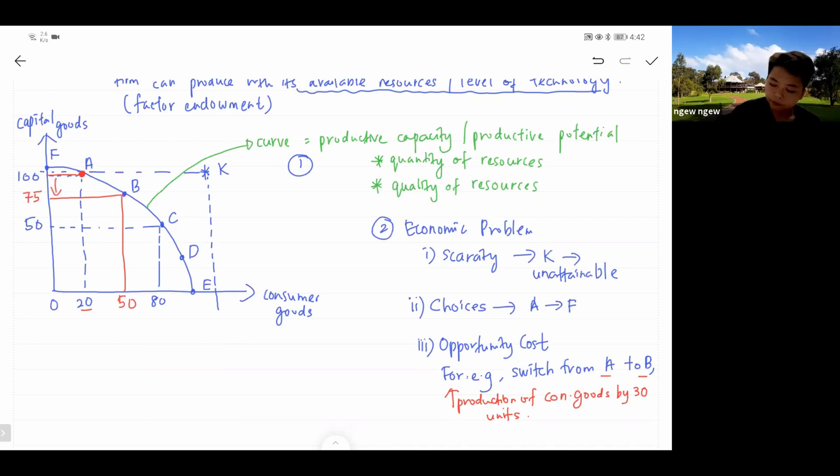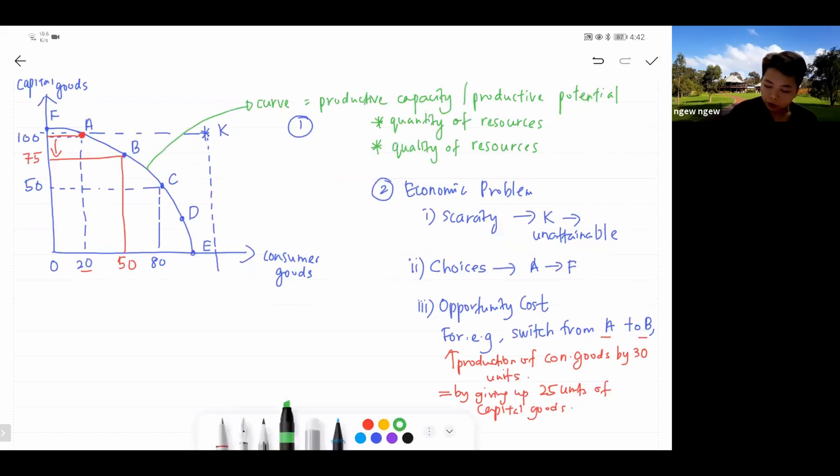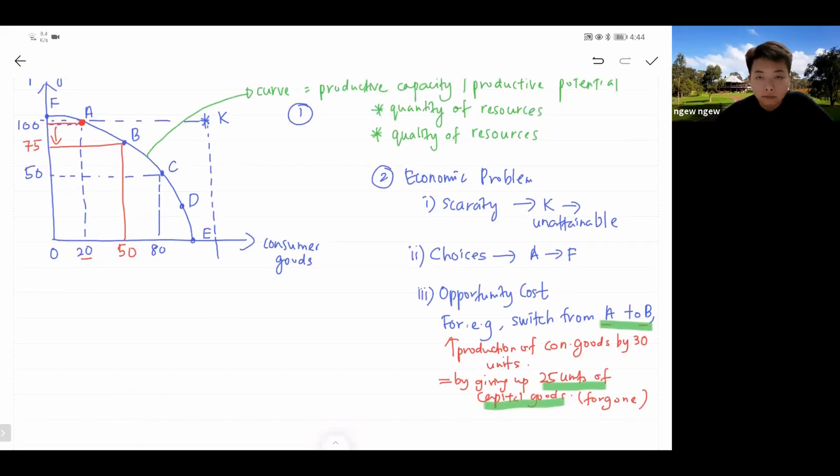By giving up 25 units of capital goods. Therefore, your opportunity cost of this decision changing from A to B is 25 units of capital goods foregone. That is your opportunity cost. As mentioned just now, something that you've foregone for another choice or another option is your opportunity cost. The 25 units of capital goods is basically your opportunity cost.